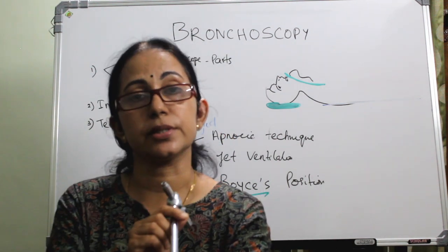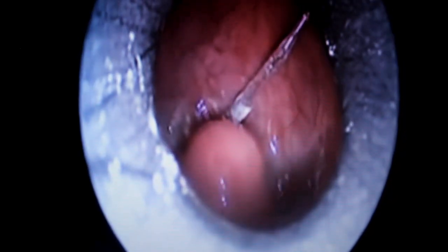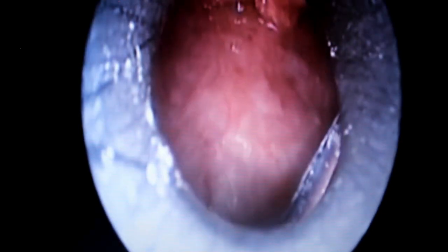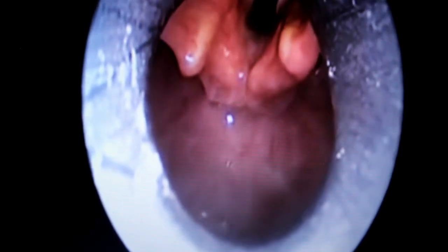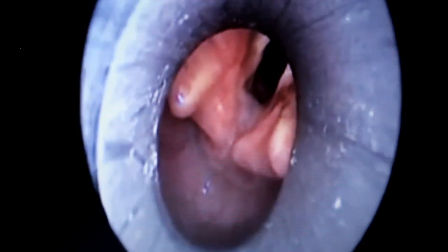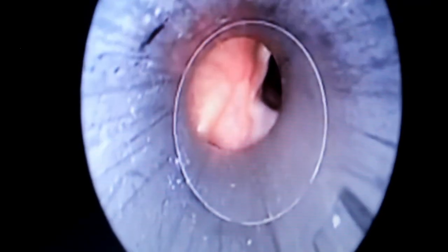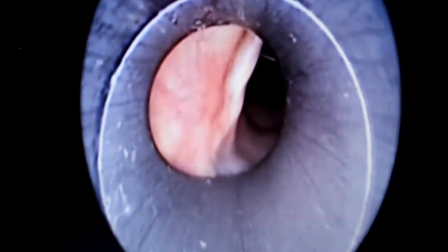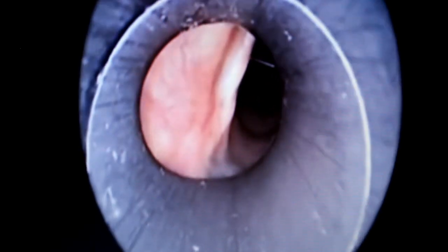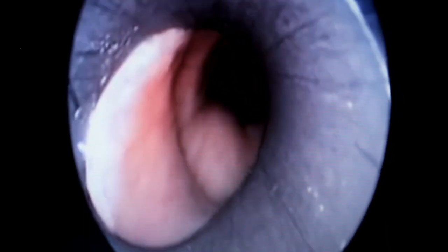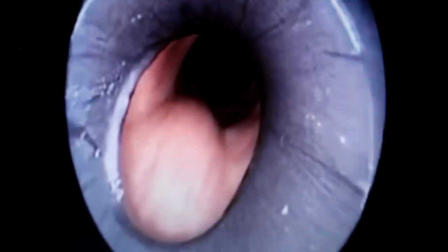Once you see the uvula, elevate the epiglottis with the tip of the bronchoscope to visualize the vocal cords. On reaching the vocal cords, turn the scope in a clockwise direction to pass through the vocal cords into the subglottic area and reach the trachea.